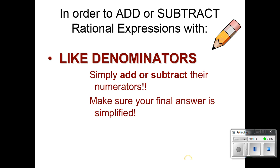So in order to add or subtract rational expressions with like denominators we're simply going to add or subtract their numerators. Make sure your final answer is simplified so you may need to do some factoring. Make sure you know all the different types of factoring.